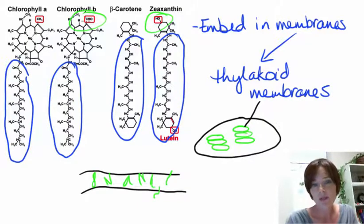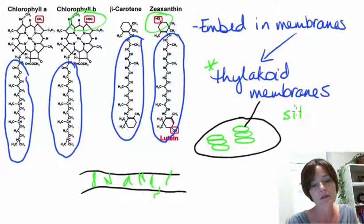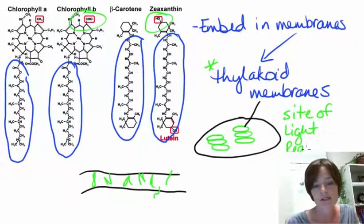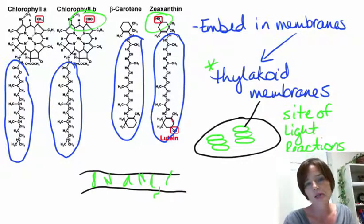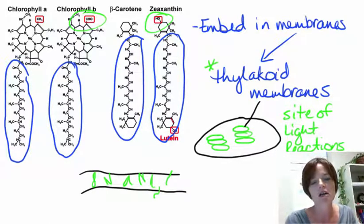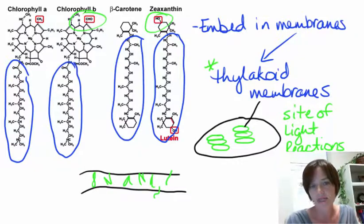Because the pigments are located in the thylakoid membranes, the thylakoid membranes will also be the site of the light reactions, which are the first stages of photosynthesis. The light reactions' job is to collect light energy, so the pigments — which are the ones actually harvesting the light — are where the light reactions take place.